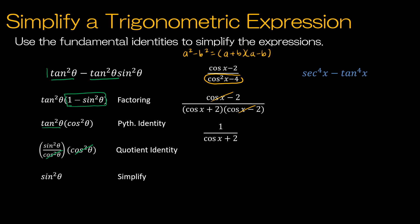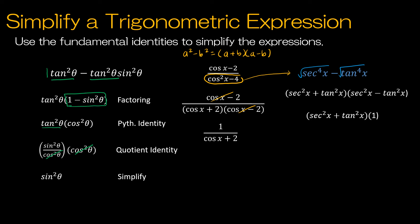For the practice question, the first step is to factor using the difference of squares: the square root of secant to the fourth x is secant squared x, and the square root of tangent to the fourth x is tangent squared x, giving us (secant squared x + tangent squared x)(secant squared x − tangent squared x). Using the Pythagorean identity, secant squared x minus tangent squared x equals one, leaving a final answer of secant squared x plus tangent squared x.